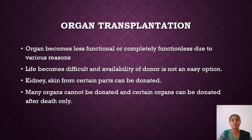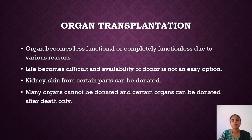Availability of a donor is an important aspect of organ transplantation. Every person has a pair of kidneys, and a person can lead a healthy life with a single kidney, so one kidney can be donated. Skin from certain parts of the body can also be donated. Before donation, factors like age, blood group, and many other things of the recipient and donor need to be considered.